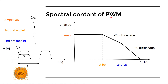The spectral content of a PWM signal can be drawn with a maximum amplitude visible on the envelope. We have a minus 20 dB per decade roll-off at the first breakpoint, and then minus 40 dB per decade roll-off at the second breakpoint. The amplitude value depends on two times the peak voltage times tau, where tau is the on-time of the period measured between 50% amplitude of the rising edge to 50% amplitude of the falling edge, divided by the period.